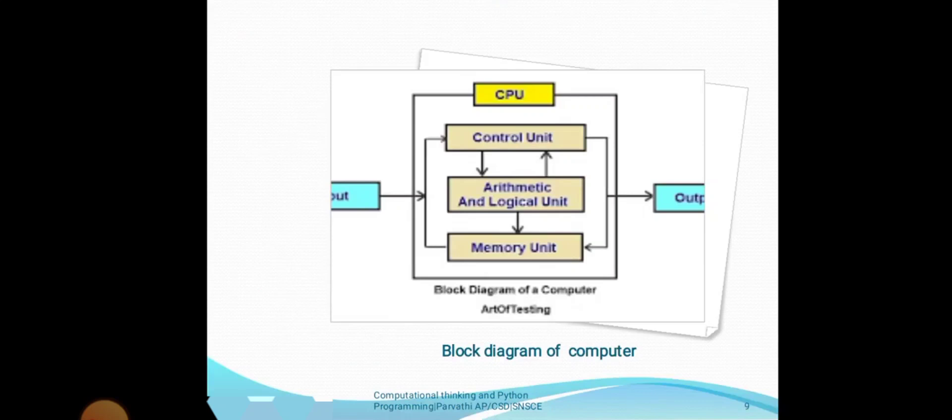This is the block diagram of a computer. First, we give the input to the computer. In the CPU, the processing is done and the result is given to the monitor. We get the output from the computer.